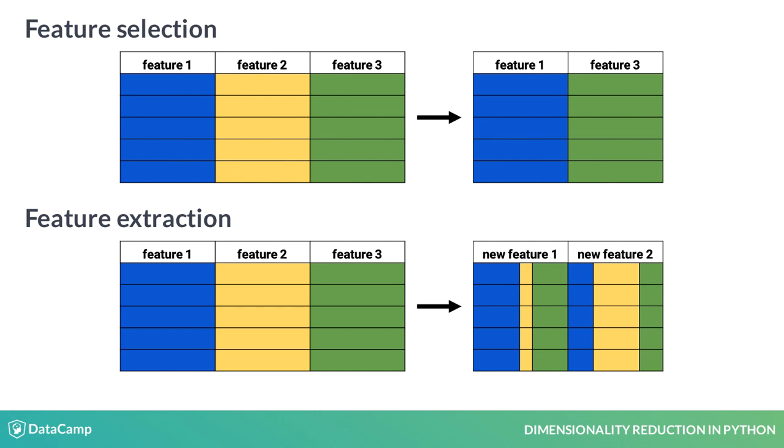Compared to feature selection, feature extraction is a completely different approach, but with the same goal of reducing dimensionality. Instead of selecting a subset of features from our initial dataset, we'll be calculating or extracting new features from the original ones. These new features have as little redundant information in them as possible, and are therefore fewer in number.